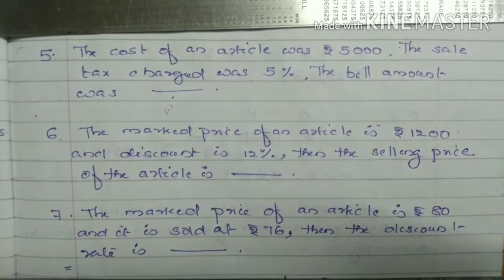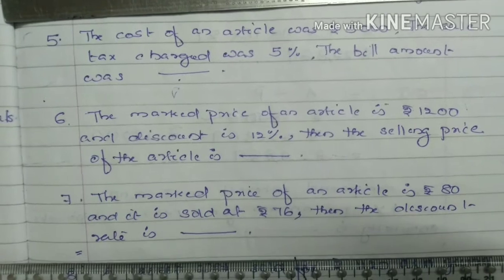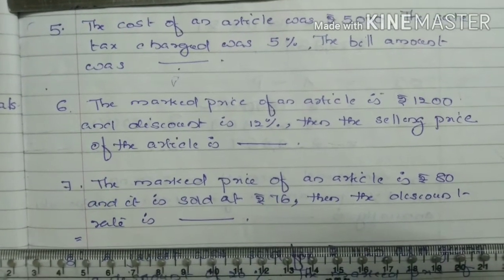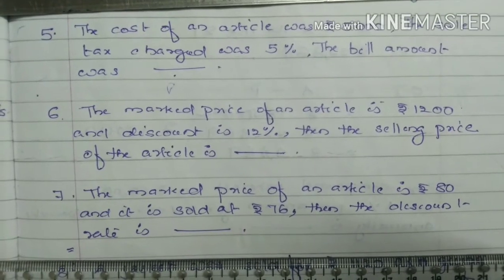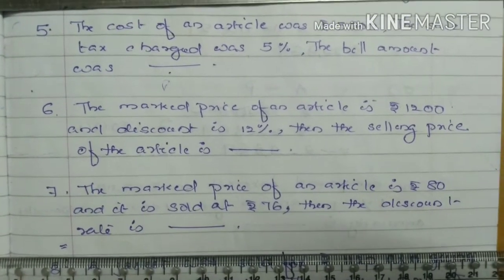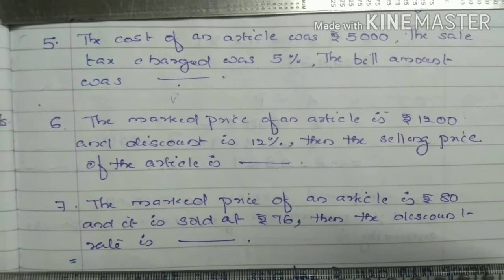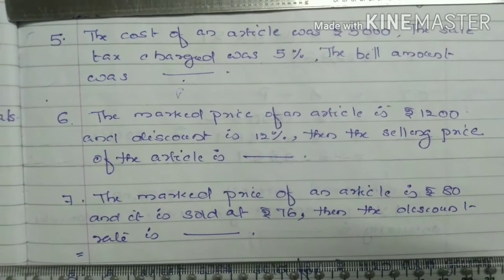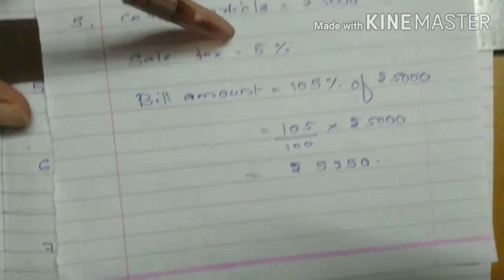The cost of an article was Rs. 5,000. The sales tax charged was 5%. You have to find out the bill amount.